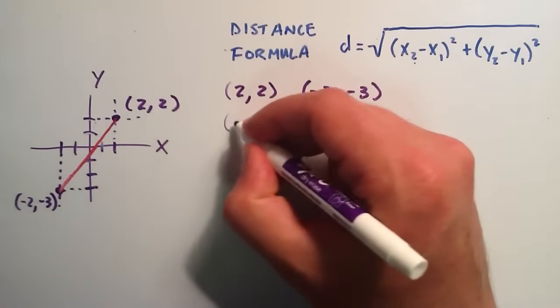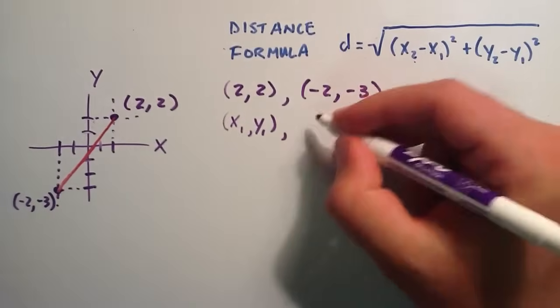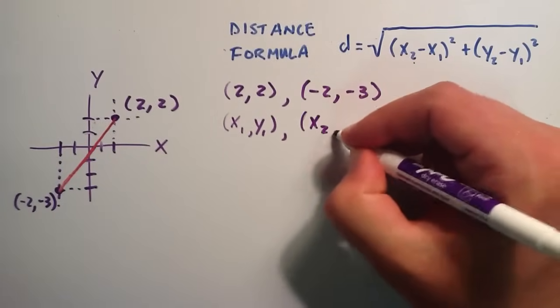So we're just going to choose the first one to be x1, y1, and the second point we'll call x2, y2.